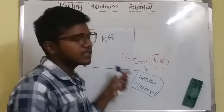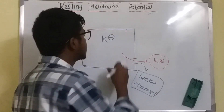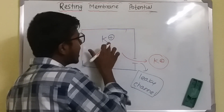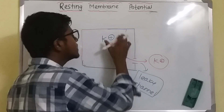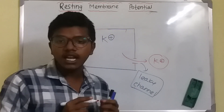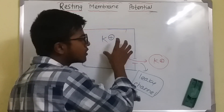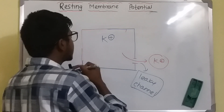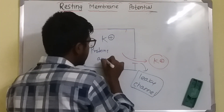As the potassium goes outside, the electro-positiveness inside the cell that was there before is changing into electro-negative. Why? Because the potassium, which is electro-positive, is leaving — leaving only the proteins and the anions, which are negatively charged, behind. So the outside of the cell will become positive whereas the inside of the cell will become negative.